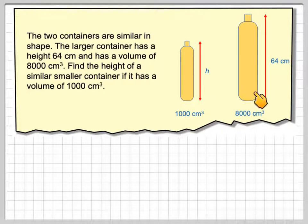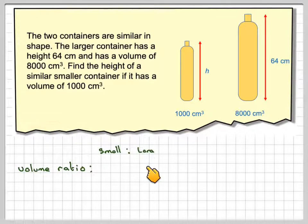So these two shapes are mathematically similar. Therefore the volume ratio, if we divide it into smaller to larger, is going to be 1,000 to 8,000. If we divide both of those by 1,000, we'll get it to be 1 to 8.